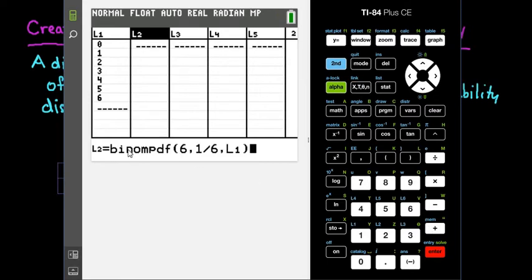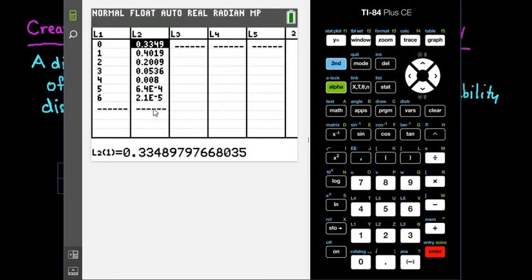So for those of you that that menu didn't show up, you are going to have at the bottom, it is going to say L2 BINOM PDF. And then you would just type in the number of trials six, comma, p, comma, wherever you have your X values. So in this case, we had our X values in L1. So you would have just hit the same thing that I hit. It just doesn't nicely prompt you. After you have plugged this in, you're going to hit enter, and it automatically calculates the probabilities of each of these values.